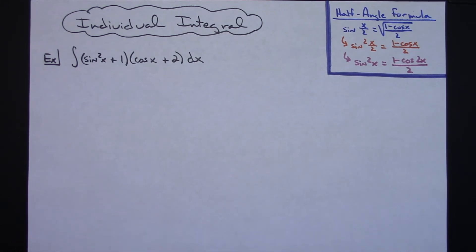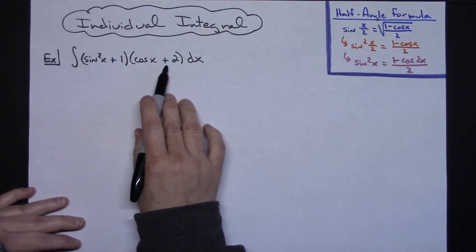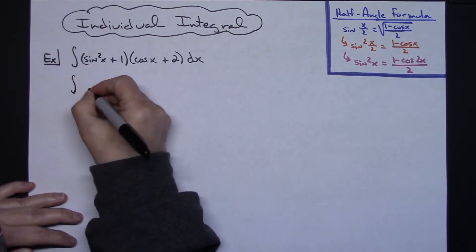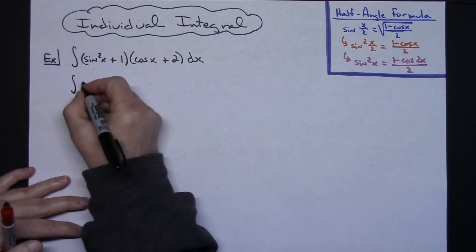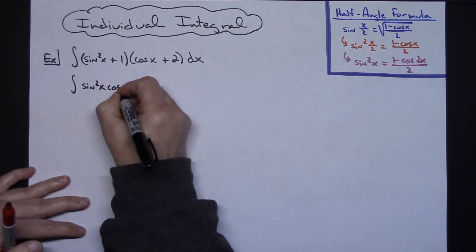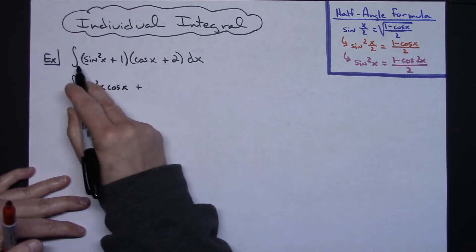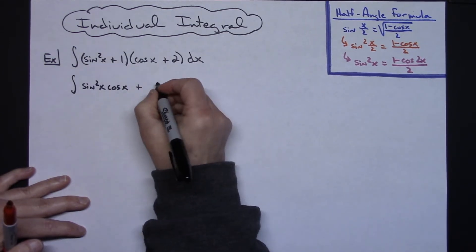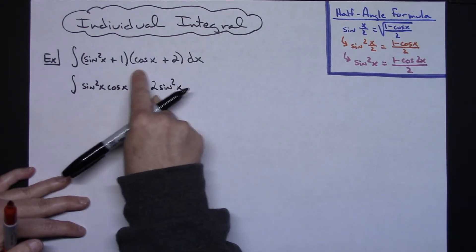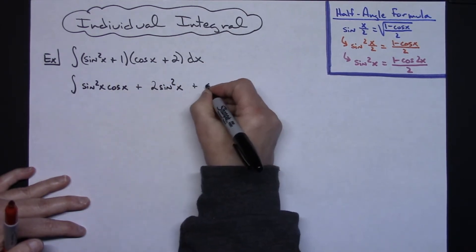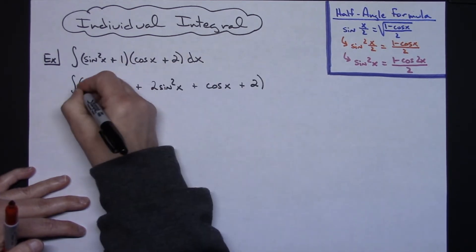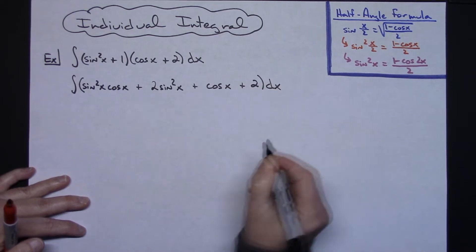Okay the first thing I'm going to do is I'm just going to take these two binomials and actually multiply them out. So then I'm going to have the integral of first terms sine squared x cosine x, plus outside terms 2 sine squared x, inside terms cosine x, last terms 2. Okay so multiplying that out first.